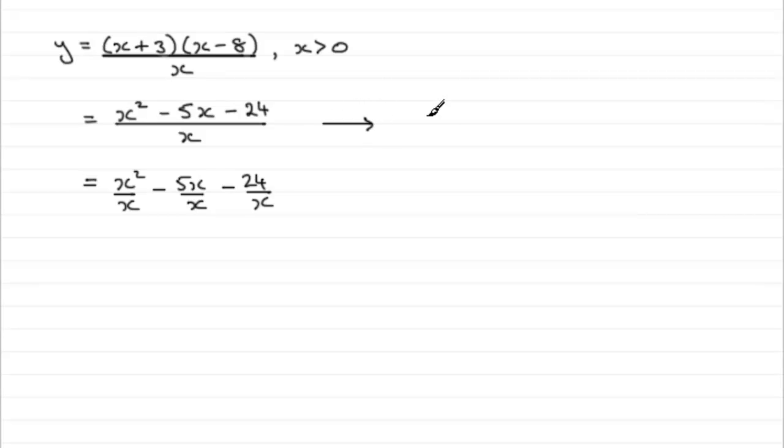You could come off this and think of this as x squared minus 5x minus 24. Put that in brackets and you're multiplying this by 1 over x. And 1 over x is the same as x to the power minus 1. So you're going to have this as x squared minus 5x minus 24 times x to the power minus 1. We'll come back to this in a moment.